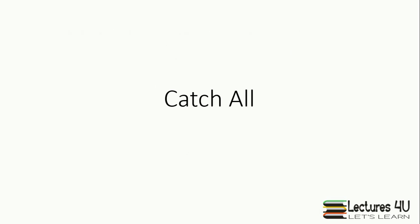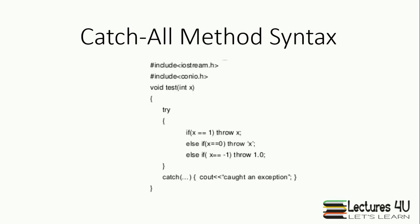In some situations we are not aware of all possible types of exception and therefore may not be able to design independent catch handlers to catch them. In such circumstances, we can force a catch statement to catch all exceptions instead of a certain type alone. In the catch-all method syntax, we have only one catch statement to catch multiple throws and it shows caught an exception.